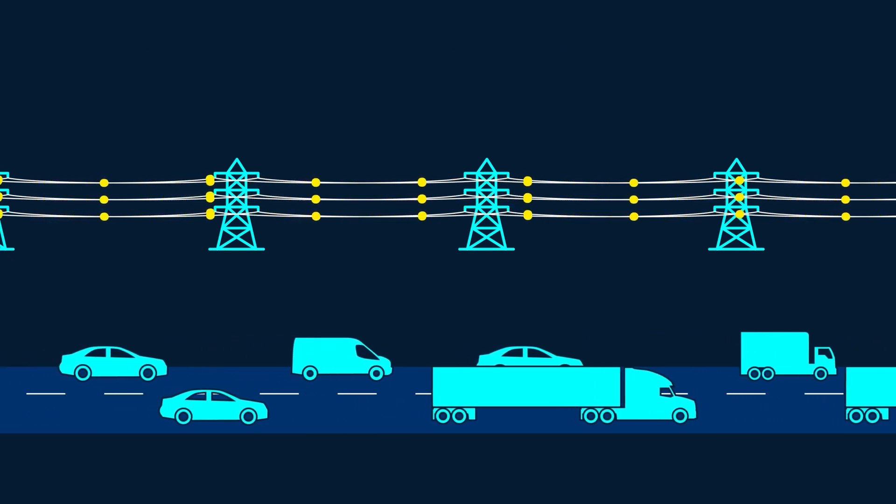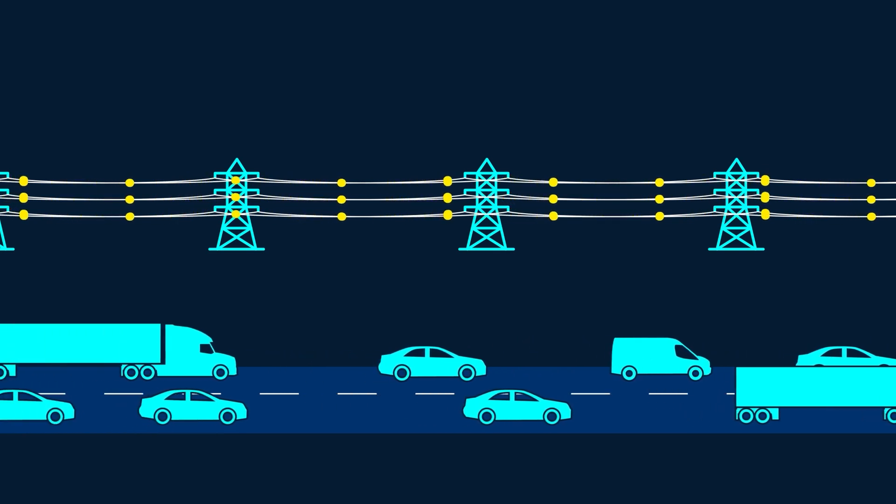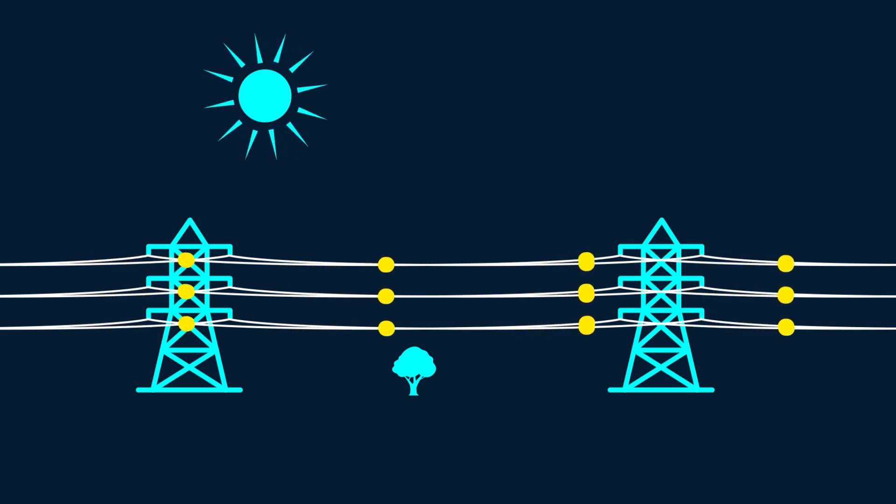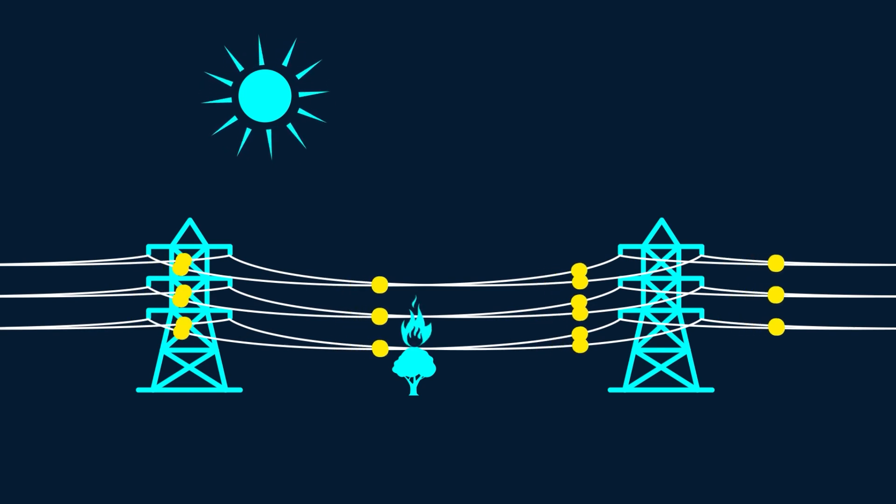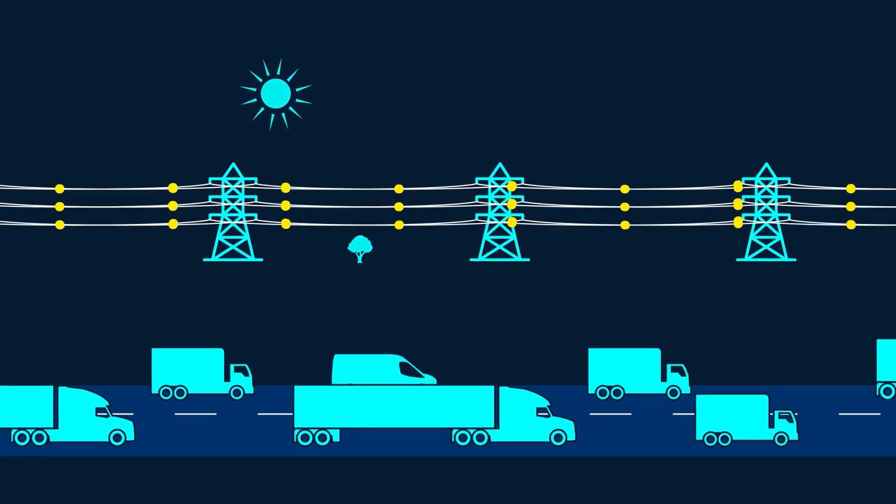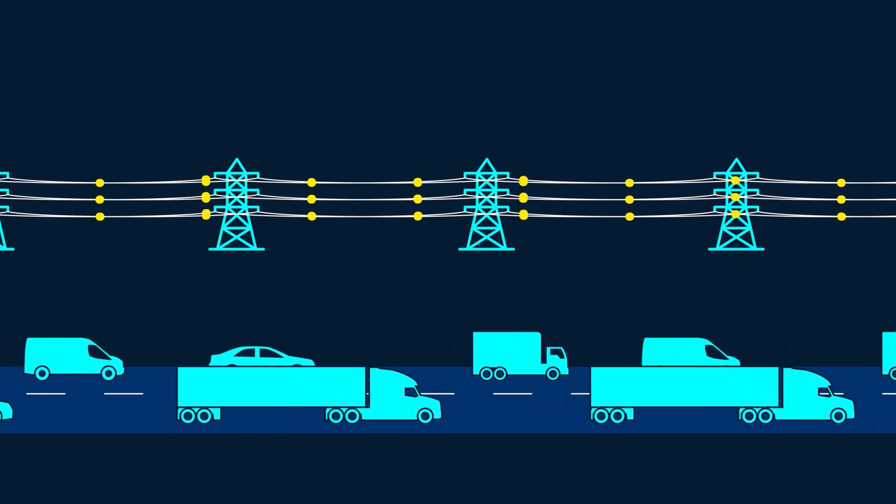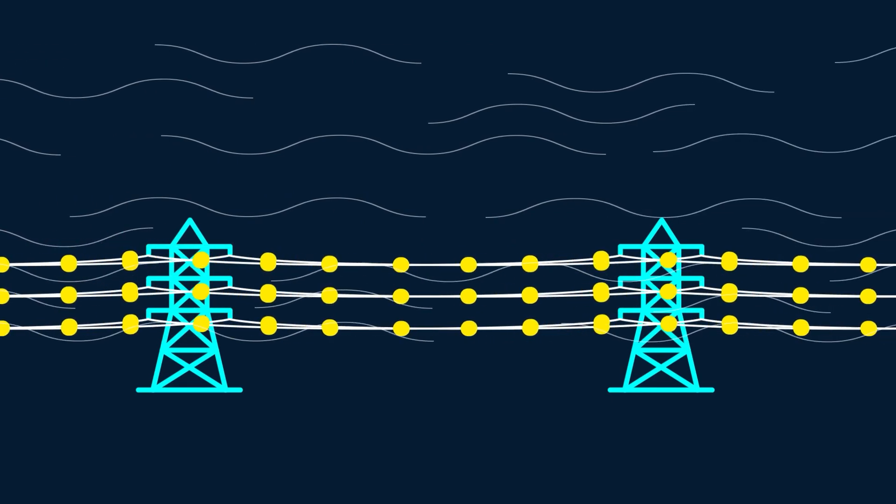Grid operators often set a conservative line rating based on the worst-case conditions for the transmission system. Super hot days when conductors can overheat and cause the wires to sag, touch trees, and cause fires. But just as traffic conditions can vary, so can the weather conditions that affect transmission lines. On cold and windy days, the wires can safely handle more power.